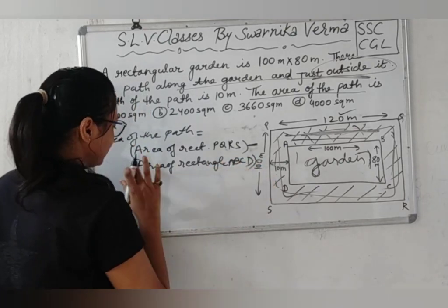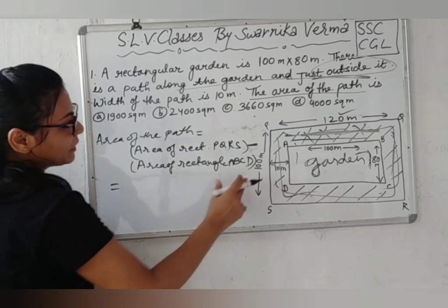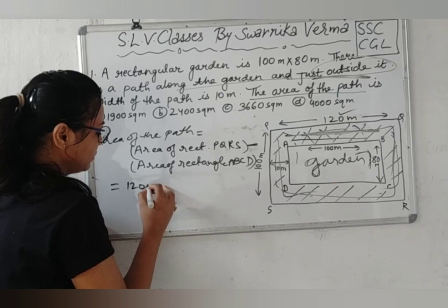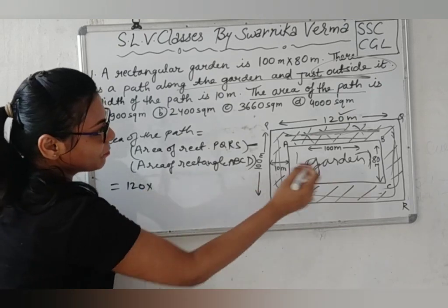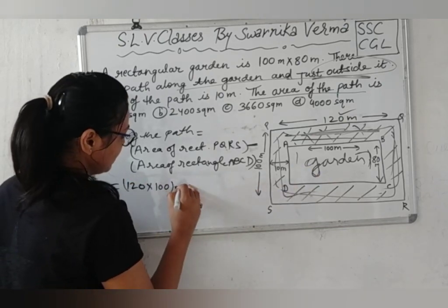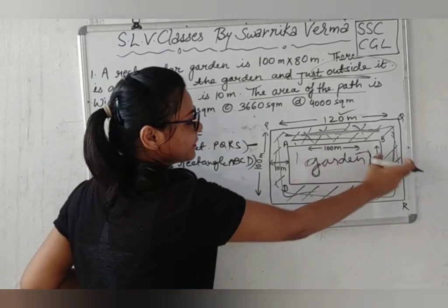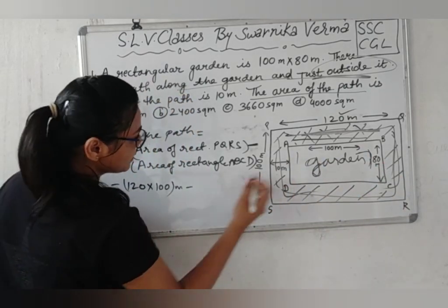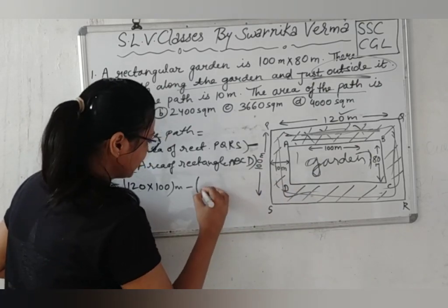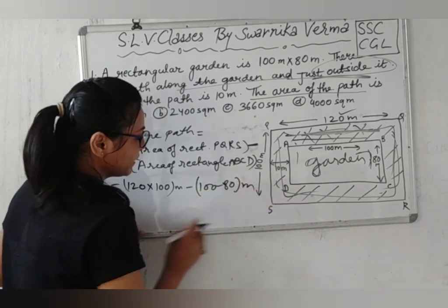We will find the area of rectangle PQRS — 120 into 100 meters. Minus area of rectangle ABCD — 100 and 80. So length 100 and breadth 80.